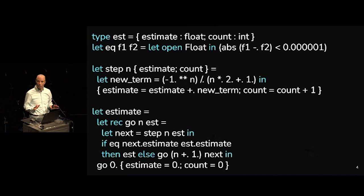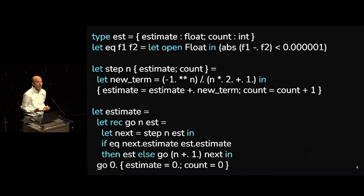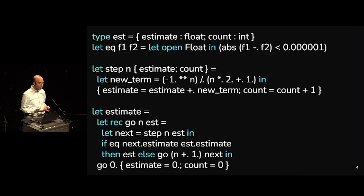One interesting result is that when you run this program the count is exactly 500,000 — a nice round number. But there's a problem with this implementation: this should really be a tight loop. At the end there we have a tail-recursive call — this should just be a tight loop — yet every time we call step we do a bunch of allocation.